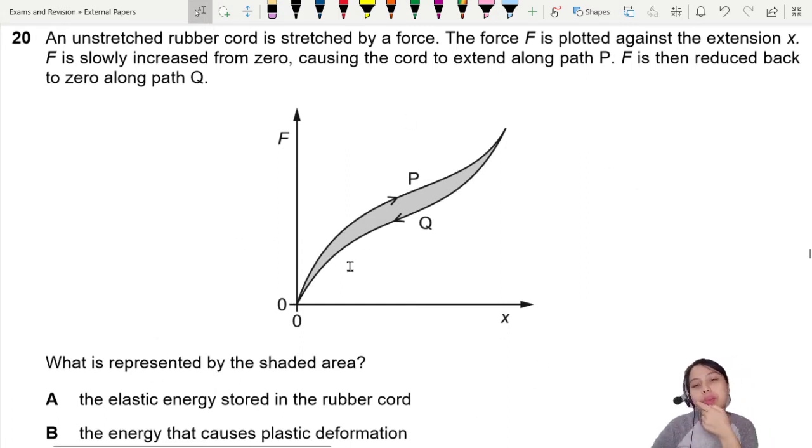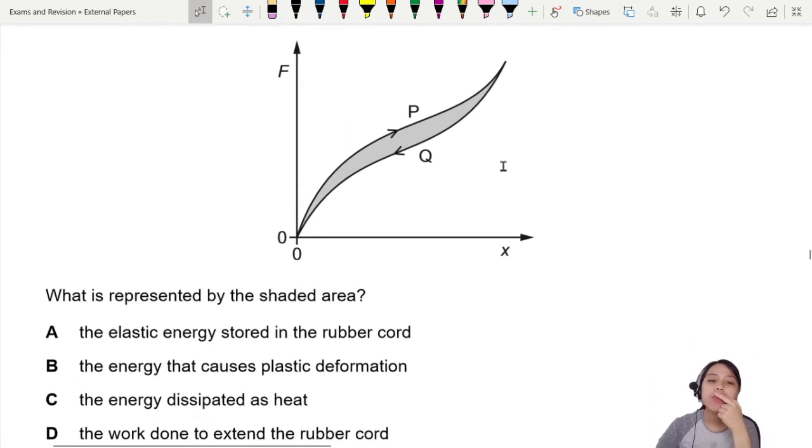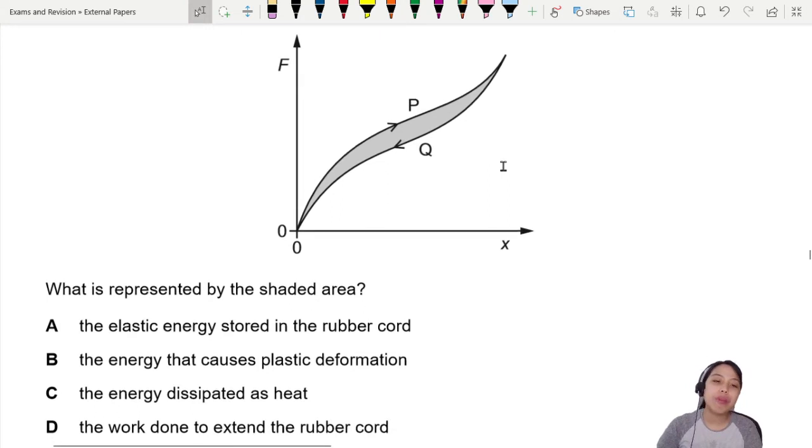What is represented by this shaded area in between? This is talking about elastic energy, elastic potential energy, also known as strain energy.